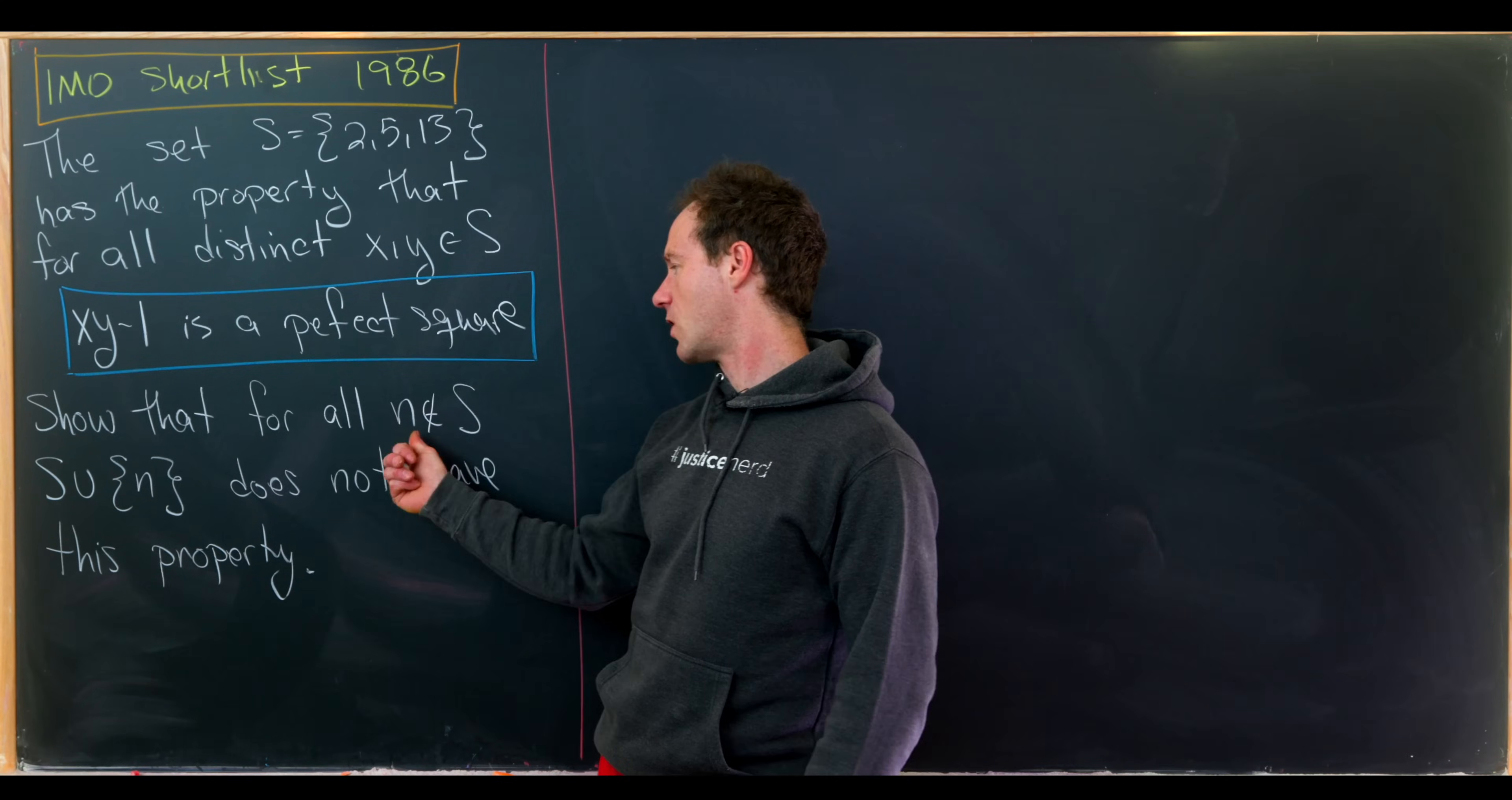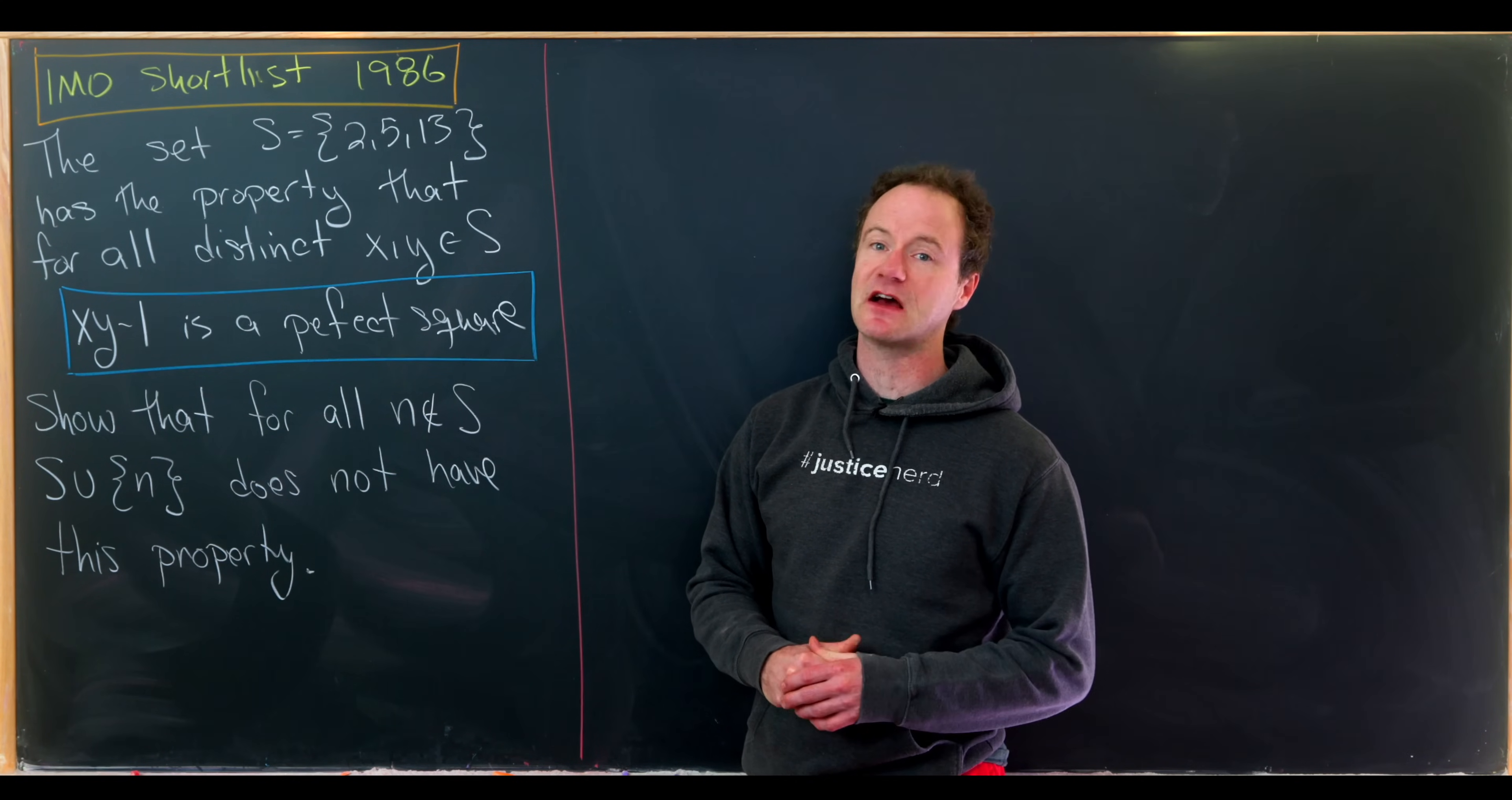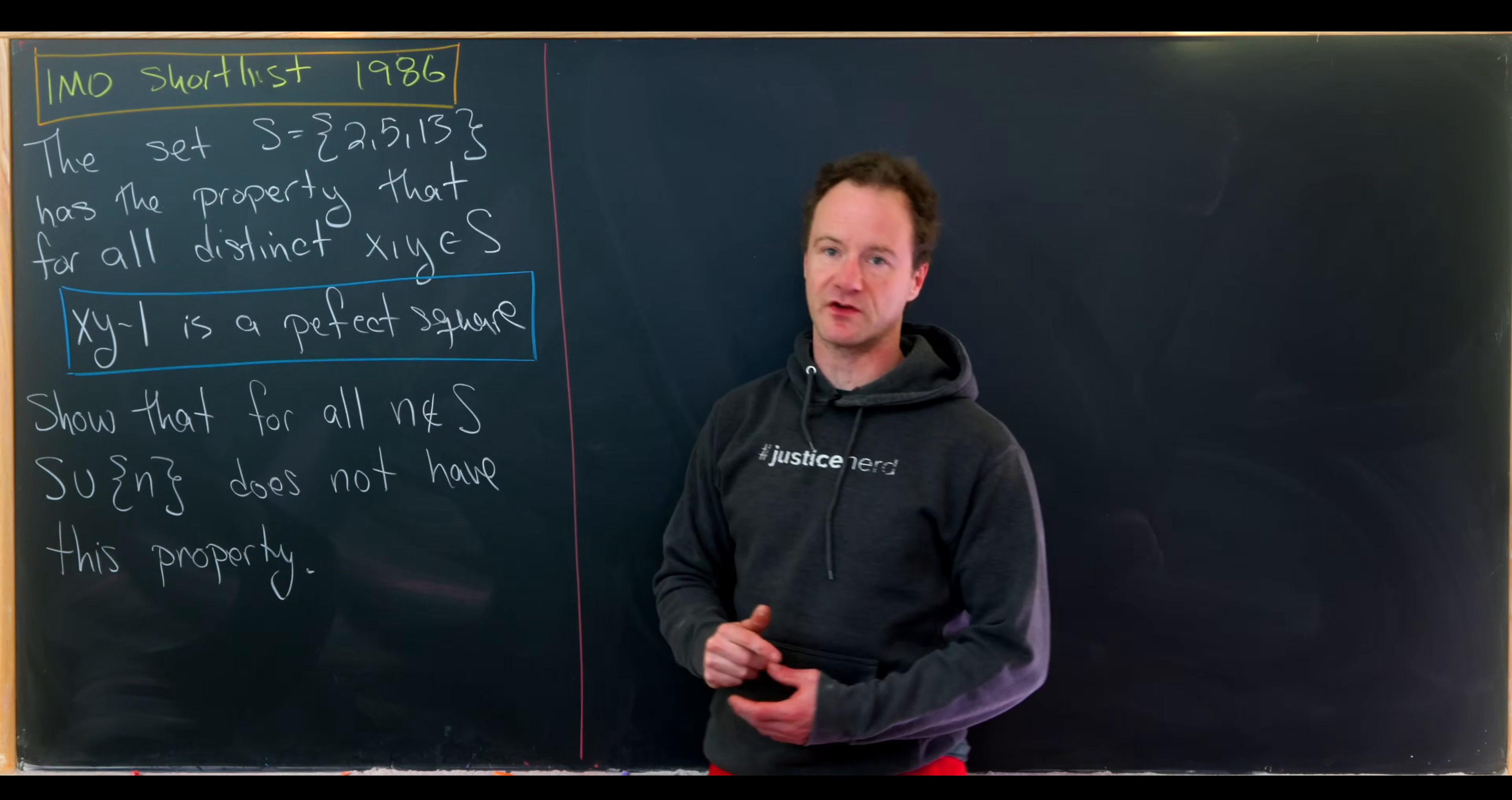Our goal is to show for all natural numbers n that are not in S, if we form S union n or the singleton n, this set does not satisfy this property. And you can work out a couple of examples on your own, but you'll see that those examples fail miserably. If you get a perfect square maybe when paired with 2, then you will not get a perfect square when paired with 5 and 13, and vice versa.